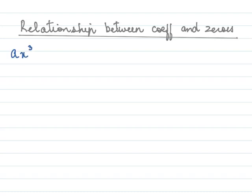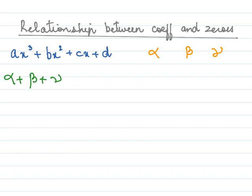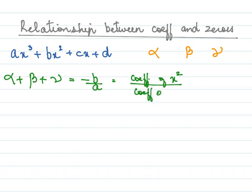Now we look at the relationship between the coefficients and the zeros. Our cubic polynomial is written as ax³ + bx² + cx + d, and the zeros are alpha, beta, and gamma. The first relationship is: alpha + beta + gamma = -b/a, where b is the coefficient of x² and a is the coefficient of x³.